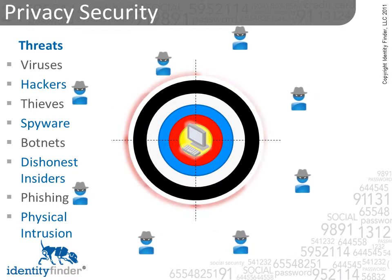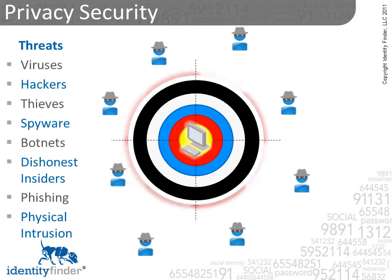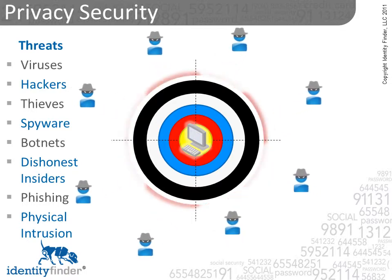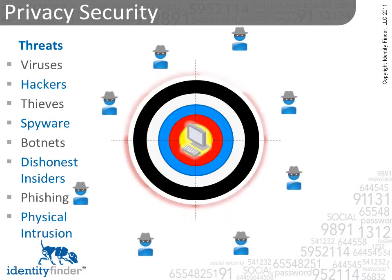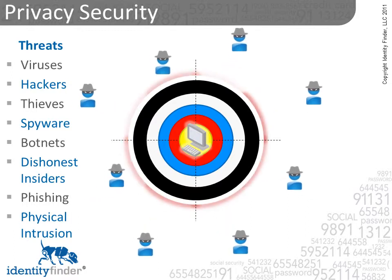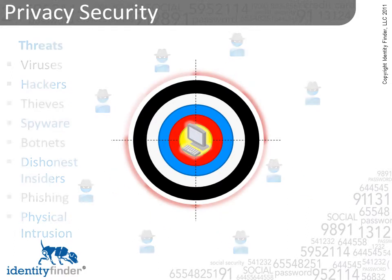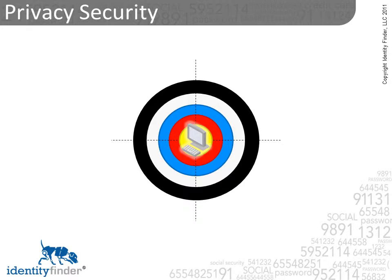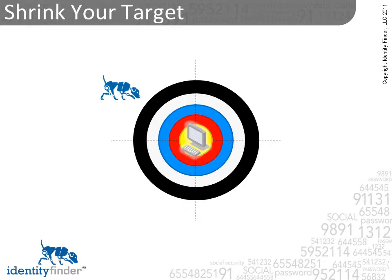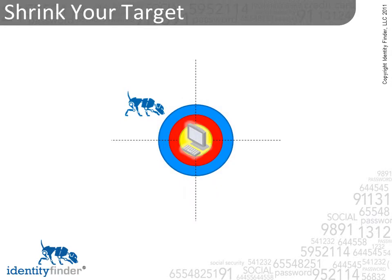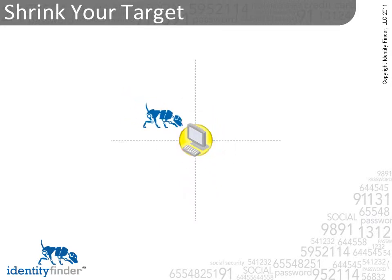But as long as you're playing defense, it's only a matter of time until one of the threats penetrates your systems. That brings us to the second principle of security: decreasing the value of the target. That's what Identity Finder does best. Identity Finder finds and neutralizes sensitive information on your computers, devices, and networks.